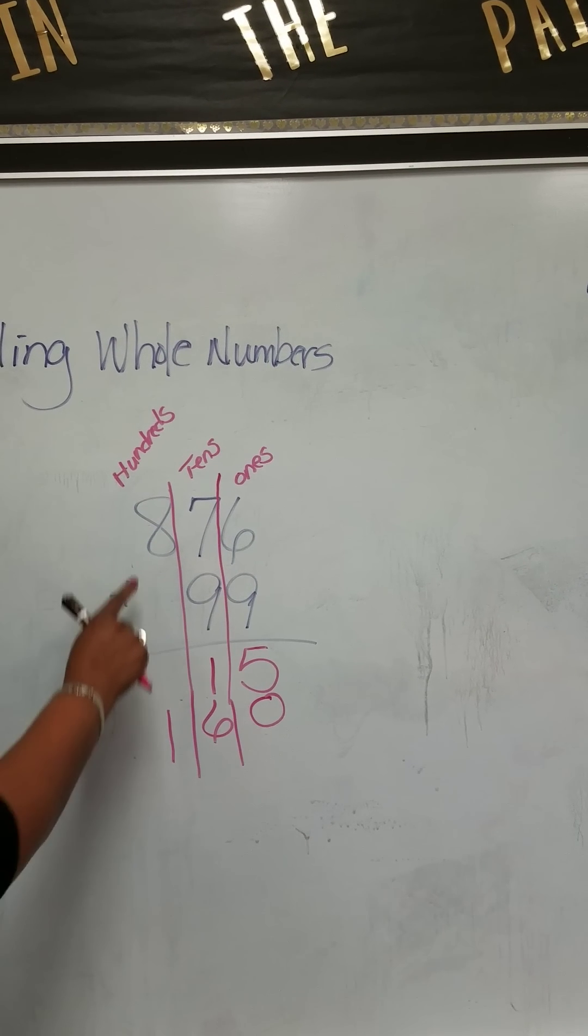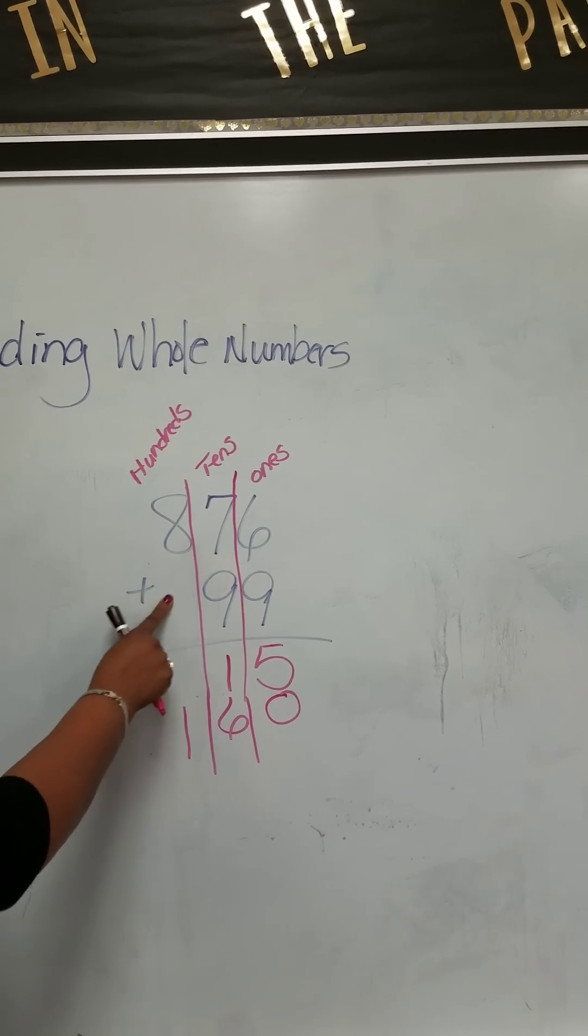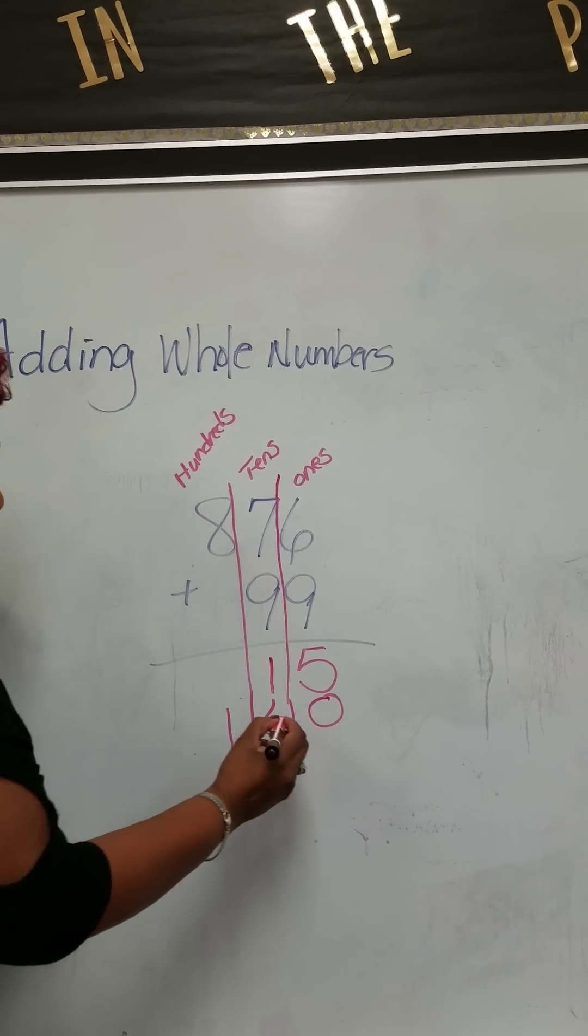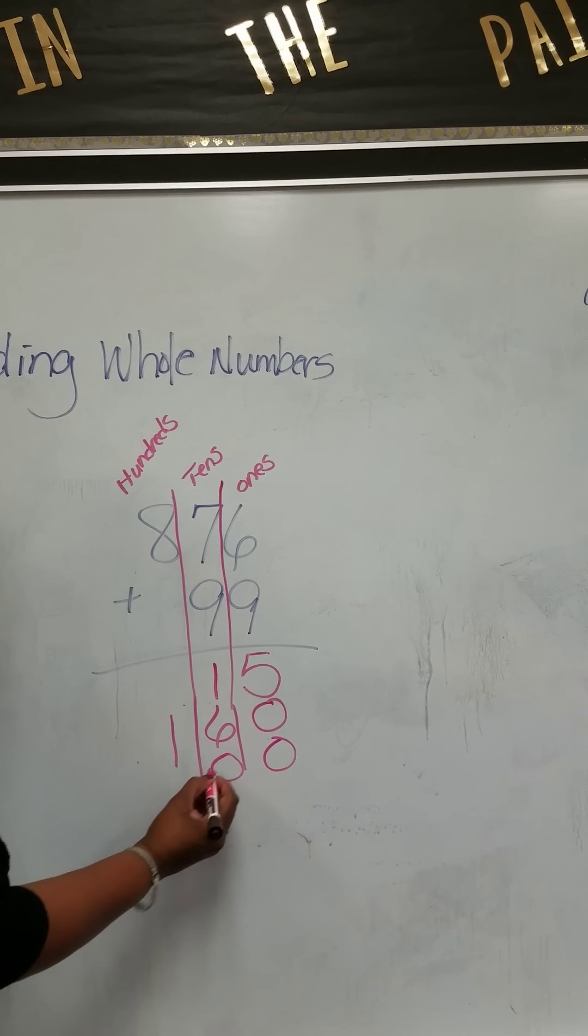And then we move over to the hundreds column. We have eight plus nothing, which is zero. That gives us 800. So we're going to write 800.